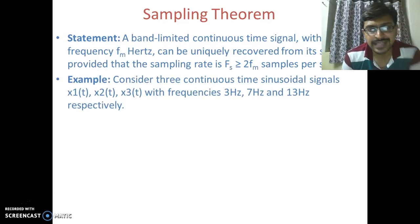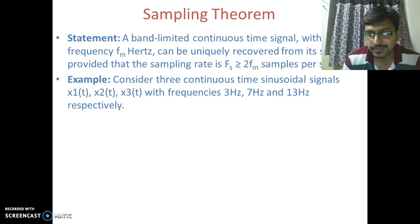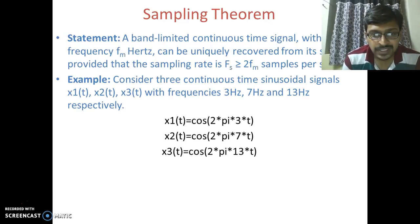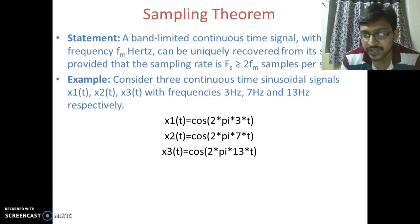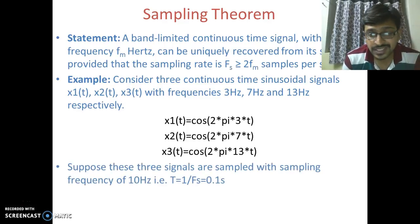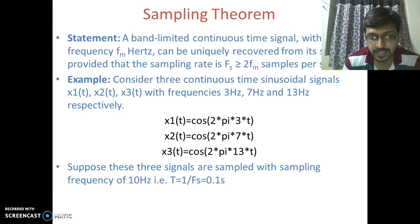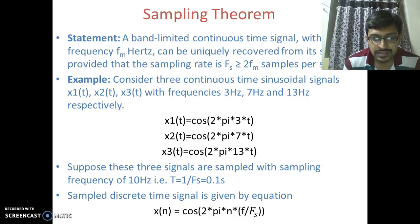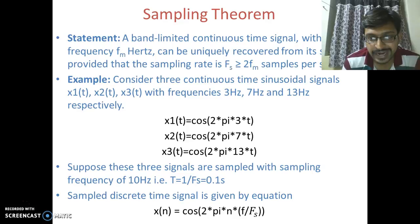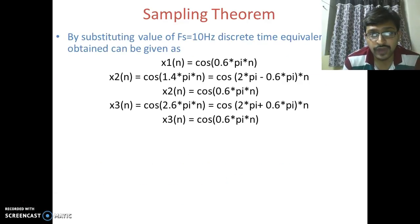Consider an example where three continuous time sinusoidal signals x1(t), x2(t), and x3(t) with frequencies 3 Hz, 7 Hz, and 13 Hz respectively are given. We can represent them as x1(t) = cos(2π·3t), x2(t) = cos(2π·7t), and x3(t) = cos(2π·13t). Now suppose these three signals are sampled with a sampling frequency of 10 Hz. The corresponding discrete time signal is given by x(n) = cos(2πn·f/fs), the formula we derived previously. Substituting fs = 10 Hz: